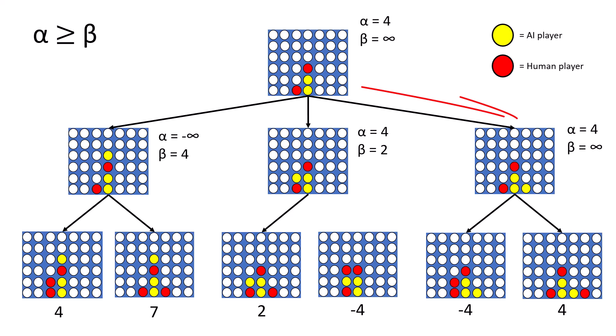We'll then pass the alpha and beta values to the right side of the tree, then take a look at the left side and find a negative 4. Since it is min's turn at this level, we can change the beta value to negative 4. Here again we find that the alpha value is greater than the beta value, so we can safely prune this branch to save on computation time.